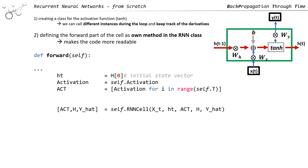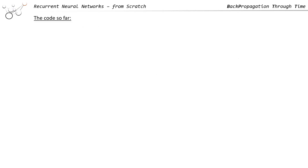We create a list of instances of the activation function, then call our RNN cell. The RNN cell calculates values for every time step, but we call it for every epoch. This makes the code more compact and flexible — if you want to change something in the cell structure, it doesn't affect the forward part. And later when applying the RNN to a dataset, we essentially run the forward part which just calls the cell.